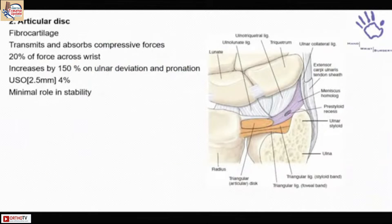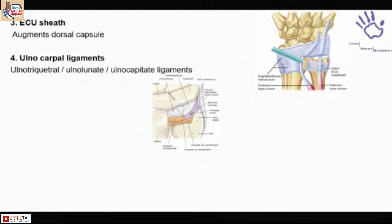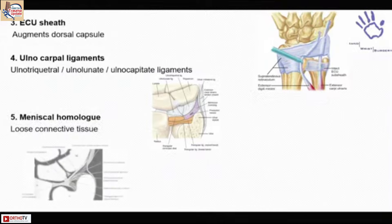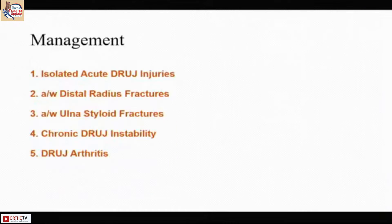The other components of the complex include the articular disc, which is a primary shock absorber with a minimal role in instability, the ECU sheath, and the ulnocarpal ligament. All of these have a role, along with dynamic stabilizers like the ECU tendon and pronator quadratus, and some role of the interosseous membrane in this stability pattern.